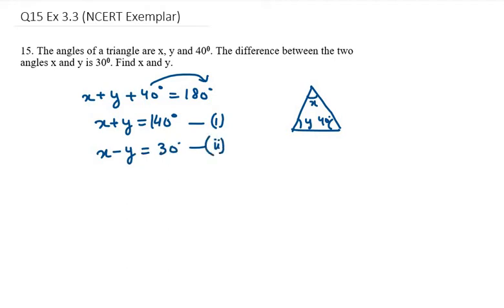Now we need to find the value of x and y. Using these two equations and eliminating y, since one is plus and another is negative, they will cancel out. Adding x plus x gives us 2x. 140 plus 30 gives us 170. The value of x will be 170 over 2, which equals 85 degrees.